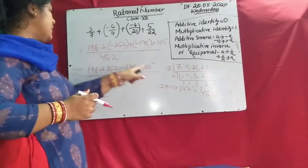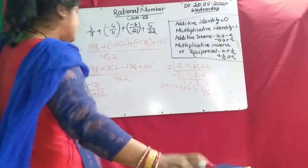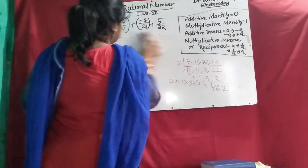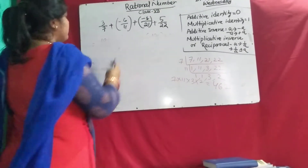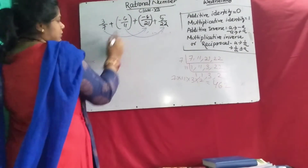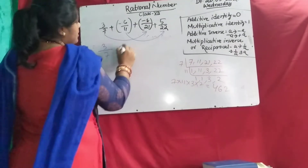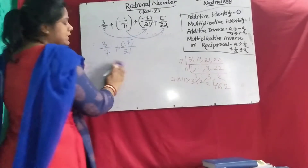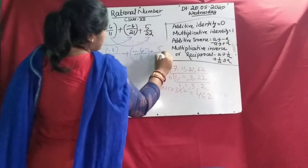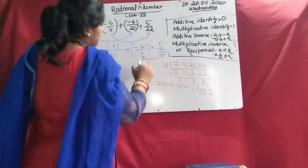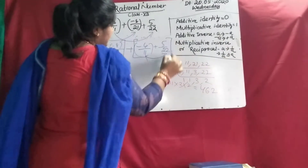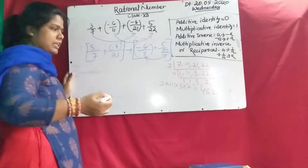First you add these two numbers, then these two numbers, then you subtract. But another easy process is there: if you take two numbers at a time — suppose 7 and 21, then 11 and 22 — it is easy enough. So suppose that 3/7 plus minus 8/21 — since 7 and 21 share LCM of 21 — plus minus 6/11 plus 5/22 — since 11 and 22 share LCM of 22. So partly you solve this, and then it will be easy to solve. Both procedures are correct, but this will be easier.